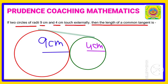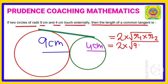Always remember the shortcut or the formula for calculating this is 2 multiplied by, within the bracket, the product of the two circles' radii. That is, within the bracket, you need to write 9 centimeters into 4 centimeters, and the